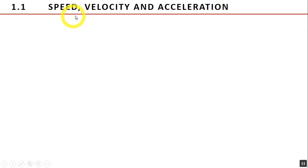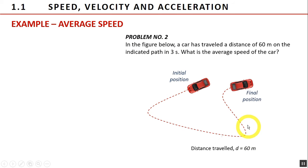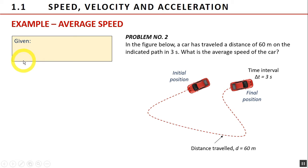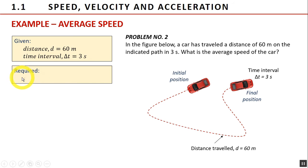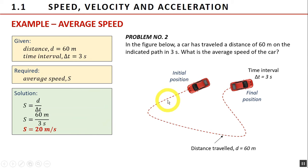Before we define velocity and distinguish it from speed, here is one easy problem about speed. Problem 2: a car has traveled a distance of 60 meters on the indicated path in 3 seconds. What is the average speed of the car? Given: distance traveled is 60 meters and time interval is 3 seconds. Required: average speed s. Using the formula s equals distance d divided by time interval delta t, and substituting the given values, the average speed of the car is 20 meters per second. Take note that this is only the average speed. To solve for maximum speed, we would need more information, which we'll investigate once we discuss instantaneous velocity and instantaneous speed.